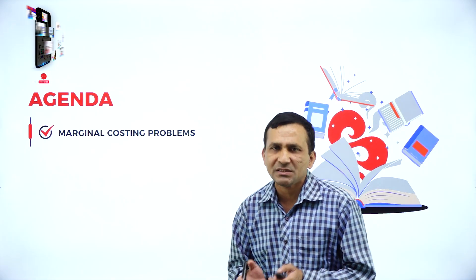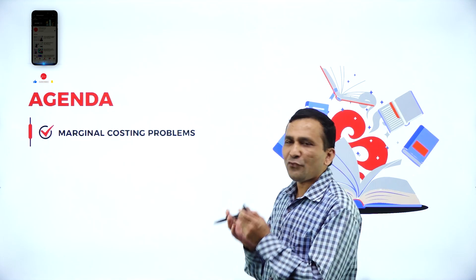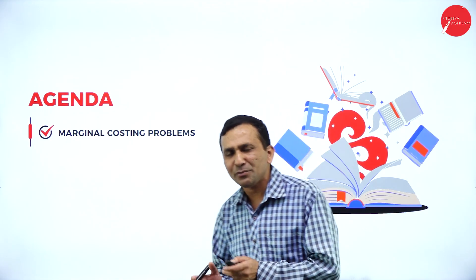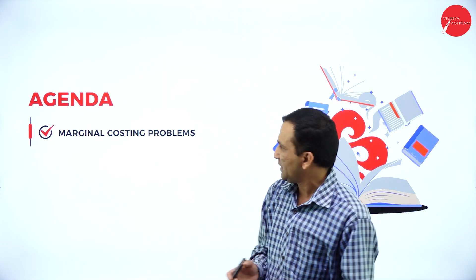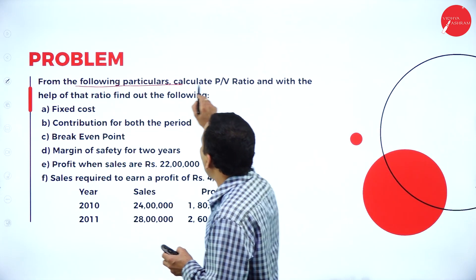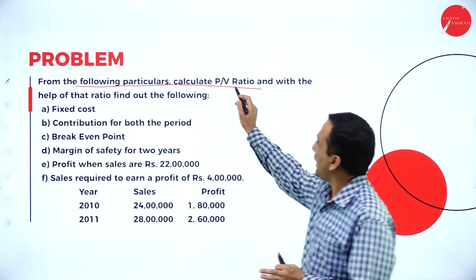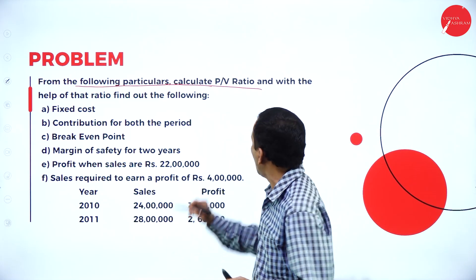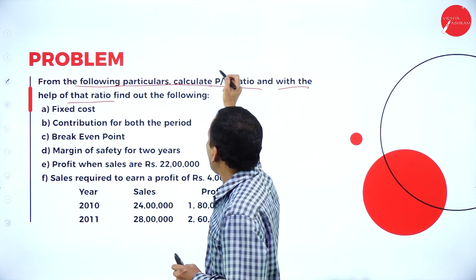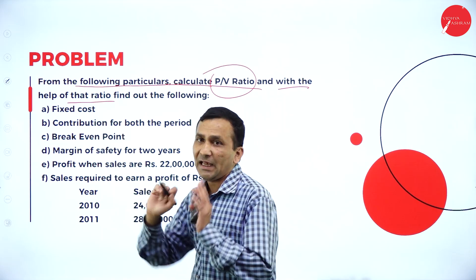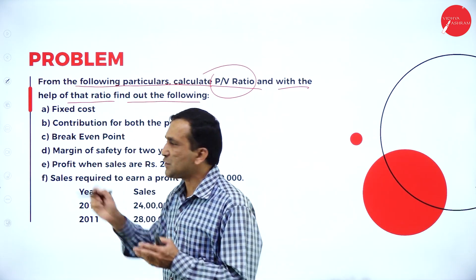Now with two years of data, we can use marginal costing as a management tool for comparing two years. From the following particulars, calculate the PV ratio first. With the help of that ratio, we will find out the following items.